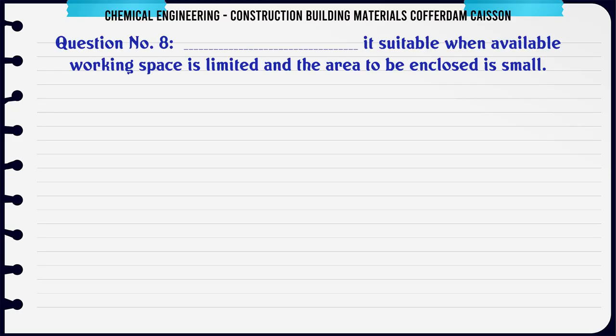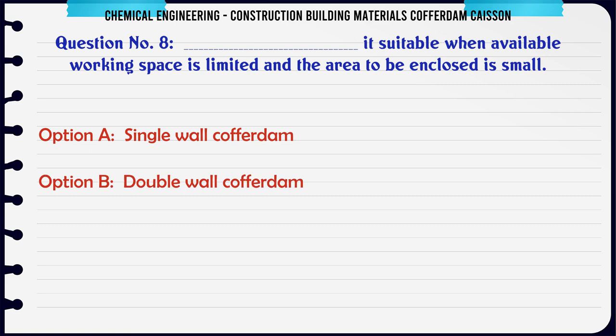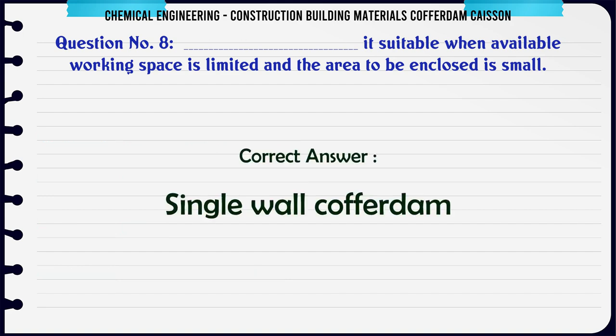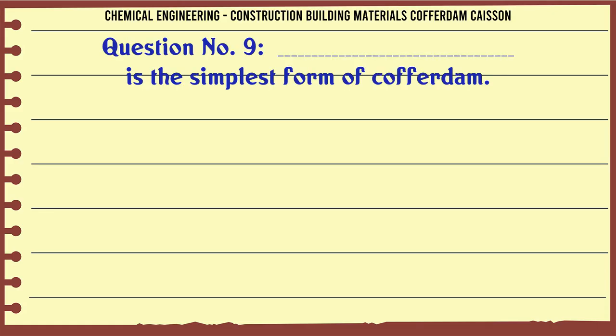Which type of cofferdam is suitable when the available working space is limited and the area to be enclosed is small? A. Single wall cofferdam. B. Double wall cofferdam. C. Dykes. D. Concrete cofferdam. The correct answer is: Single wall cofferdam.